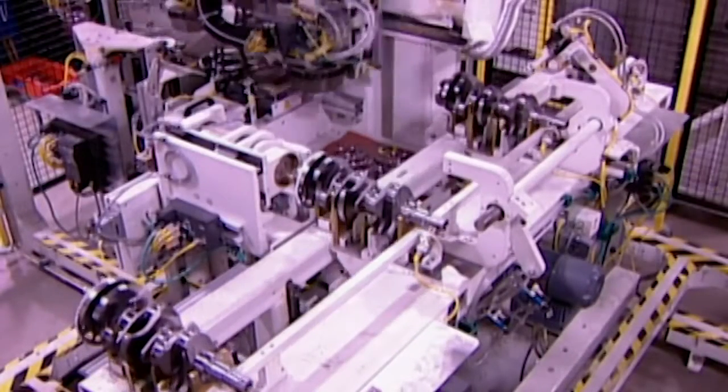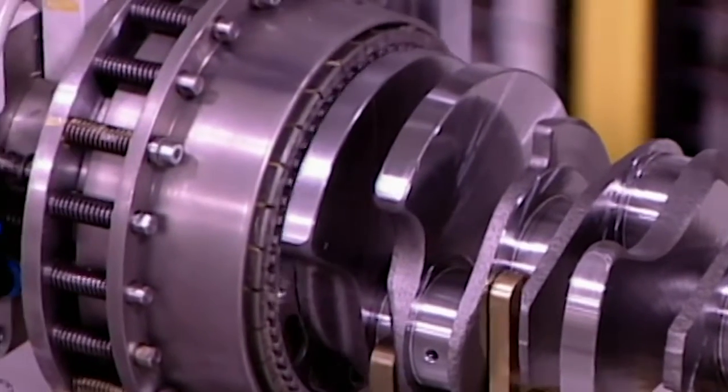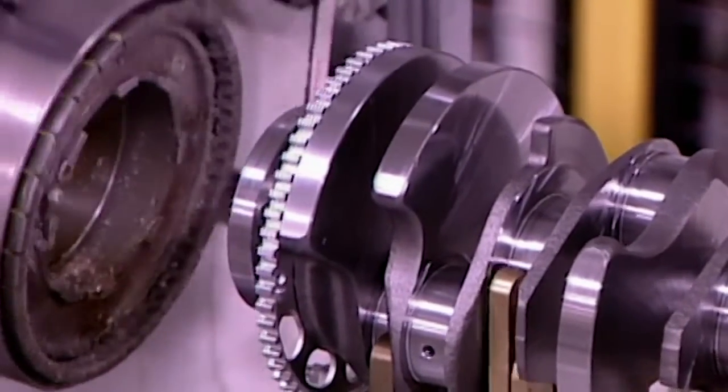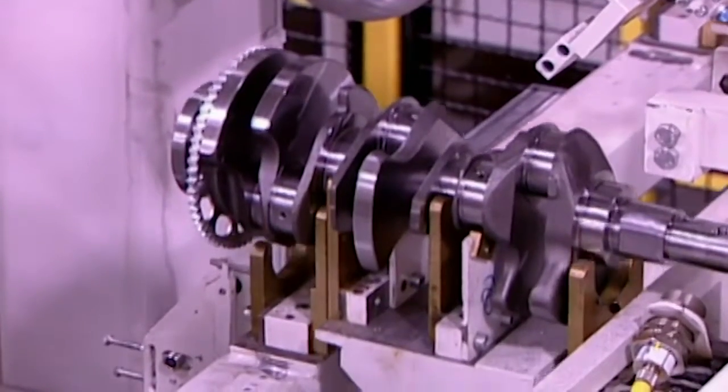Next, a steel disc with teeth called the reluctor ring is installed. It's heated and pressed onto the crankshaft. As it cools it shrinks to a tight fit. This ring helps time the combustion cycle.